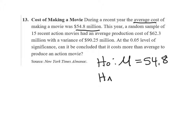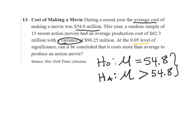For our alternative hypothesis: this year, a random sample of 15 recent action movies had an average production cost of $62.3 million with a variance of $90.25 million. At the 0.05 level of significance, can it be concluded that it costs more than average to produce an action movie? We're asking whether the mean is more than $54.8 million — we do not put $62.3 million in the null, since the hypothesized values must come from our assumption.